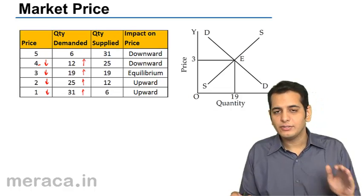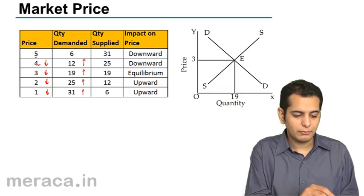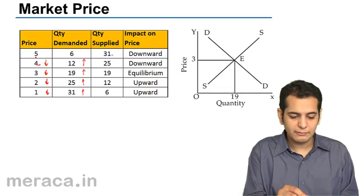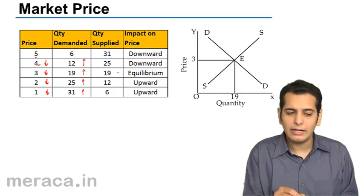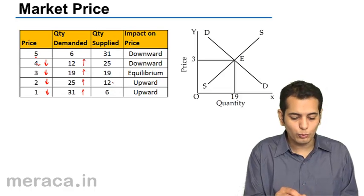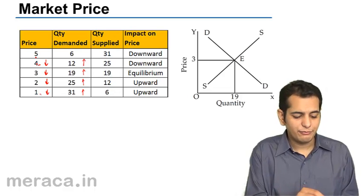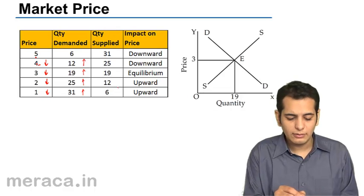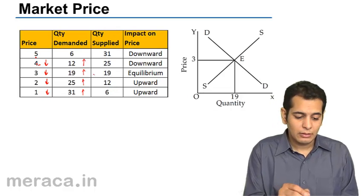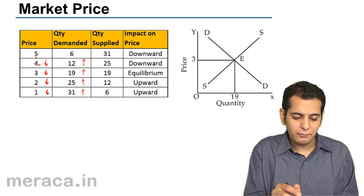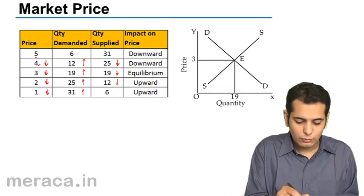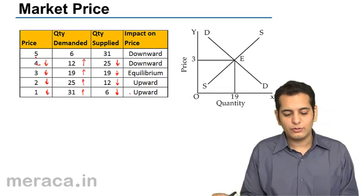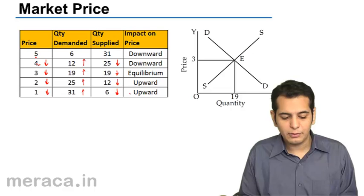Now consider price with quantity supplied. When the price is 5, quantity supplied is 31. When the price is 4, quantity supplied is 25. When the price is 3, quantity supplied is 19. When the price is 2, quantity supplied is 12. And when the price falls to 1, the quantity supplied falls to 6. With each fall in price, there is a fall in quantity supplied — this justifies the law of supply.